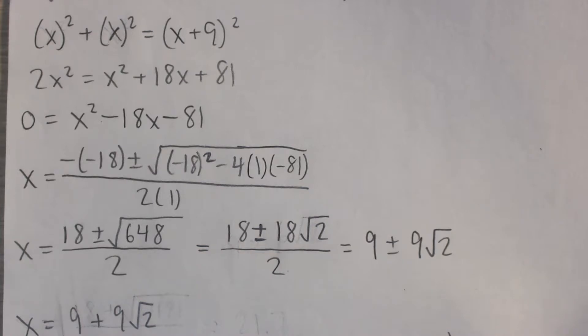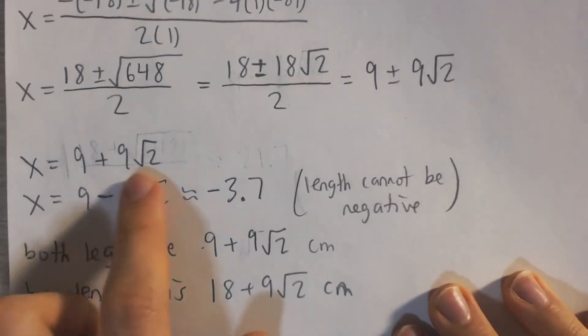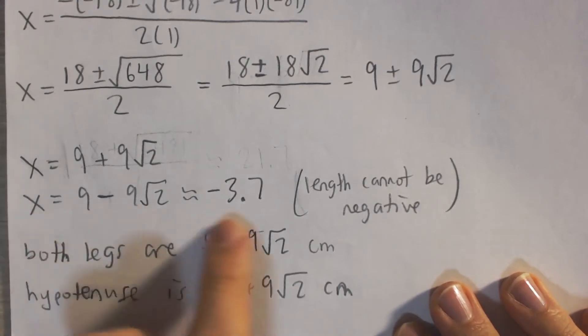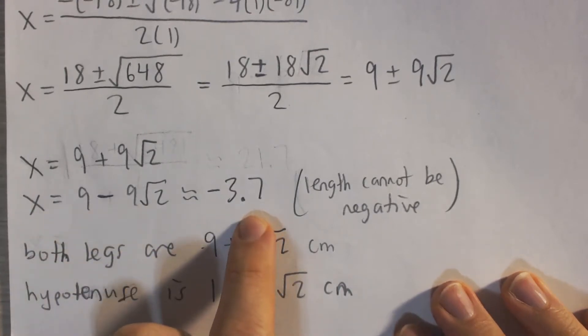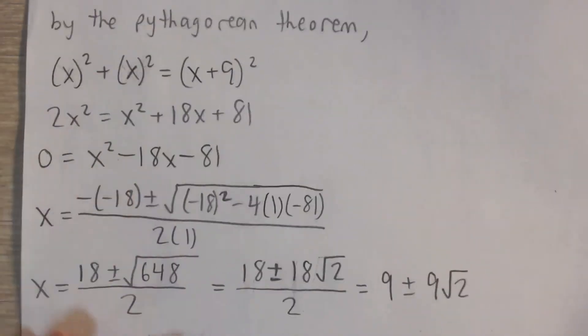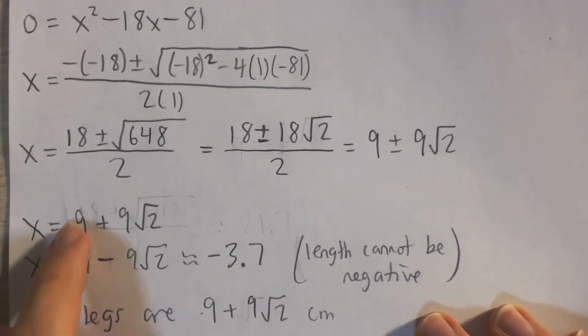Simplify that even further, and so our two answers are 9 plus 9 square root of 2 and 9 minus 9 square root of 2. However, 9 plus 9 square root of 2, that's a good answer, but this other one actually is a negative number. And we know that because this is the length of a side of a triangle, we can't have a negative length. And so, x has to be 9 plus 9 square root of 2.